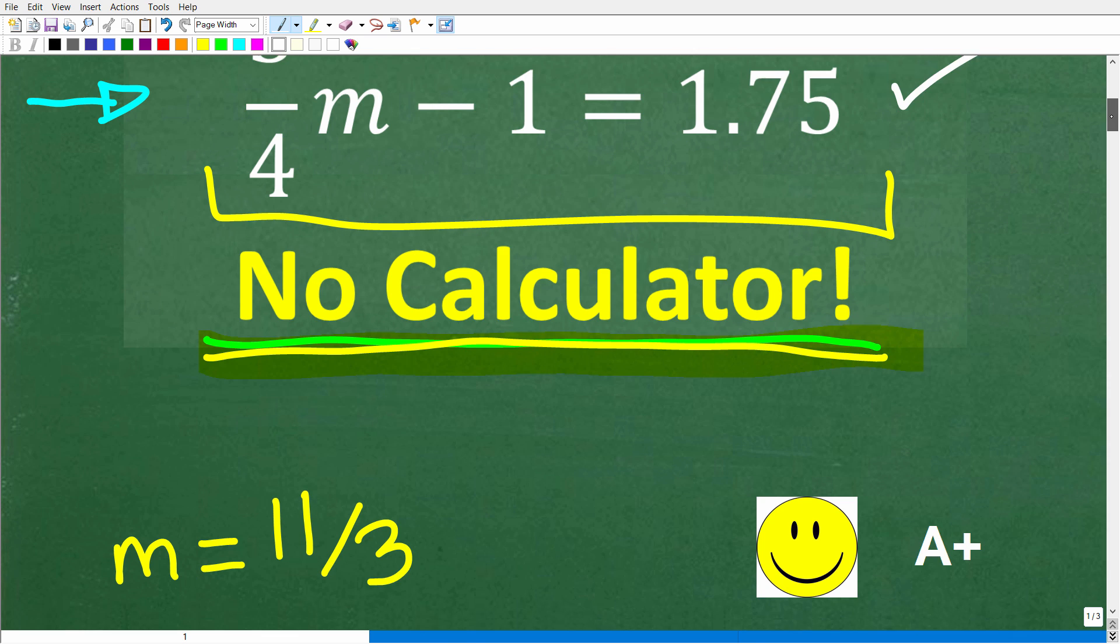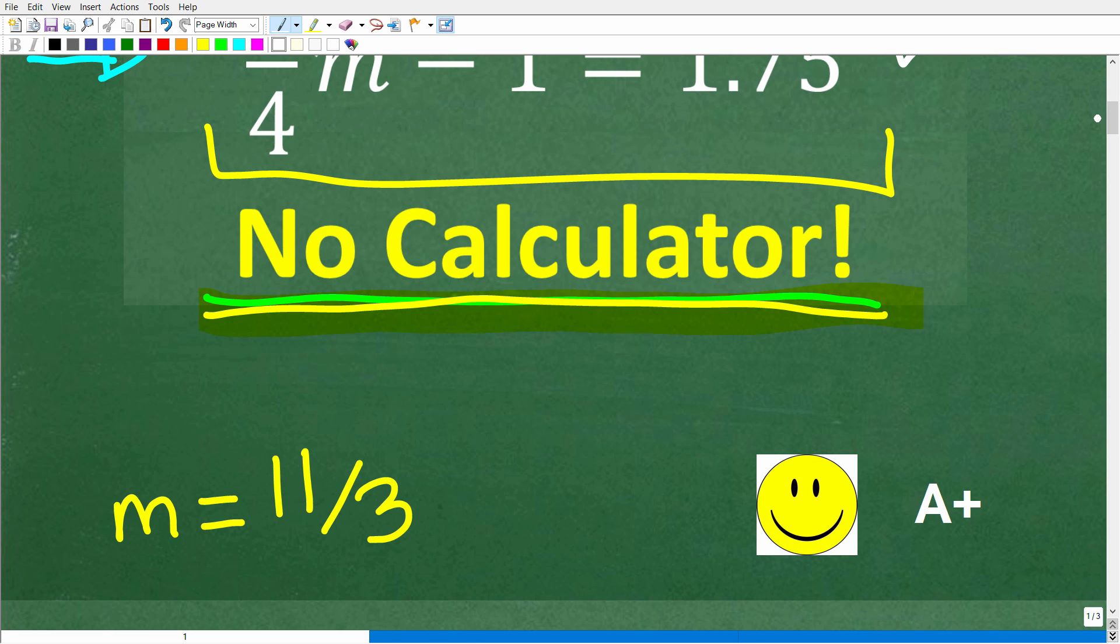All right, so let's take a look at the answer. The correct answer here is m = 11/3. Now, if you got this right and you did not use a calculator, well, you are definitely going to get a happy face and a plus.